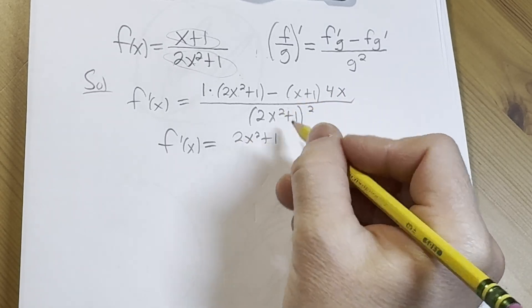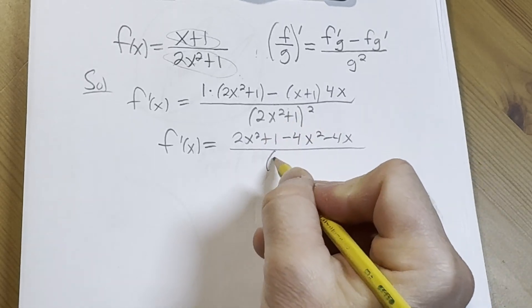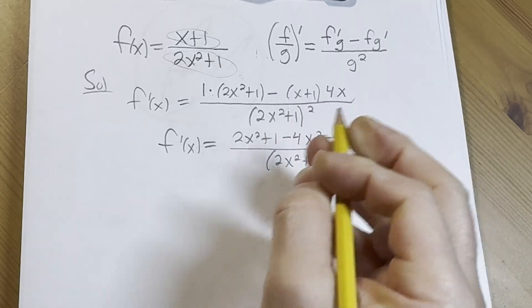Distributing the 4x gives us minus 4x² minus 4x, all over (2x² + 1)².